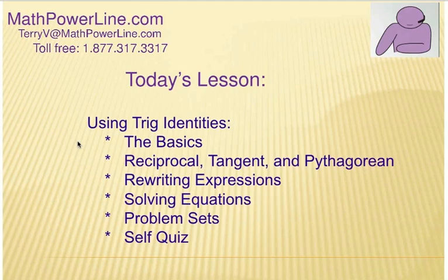In this video, I'm going to talk about the basics and basically where these things come from, and there's different types of identities. In this video, I'll talk about reciprocal identities, tangent identities, and the Pythagorean identities, which are probably the ones you'll see most common.